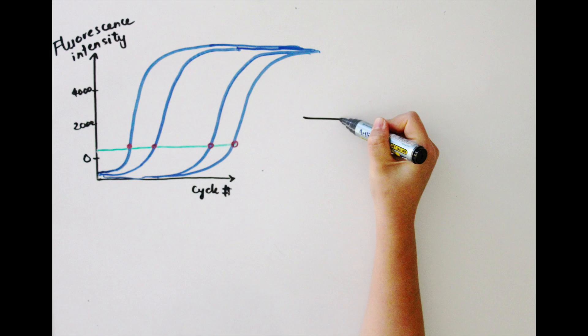And unsurprisingly, they have different CT values. The greater the concentration of the original DNA sample, the smaller the CT value.